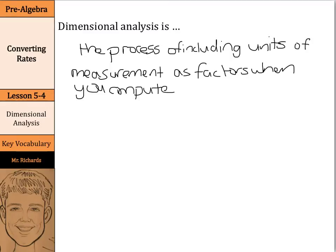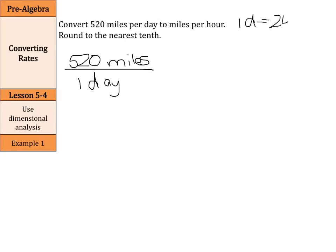Let's look at an example. We need to convert 520 miles per day to miles per hour. Let's set this up as 520 miles over 1 day. Now, we need to go from miles per day to miles per hour. So ask yourself, how do I get from days to hours? Well, the fact we can use here is that 1 day equals 24 hours.